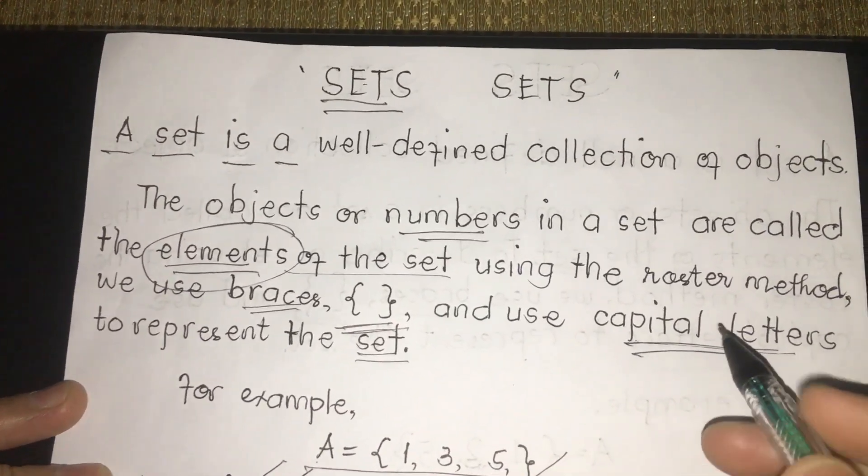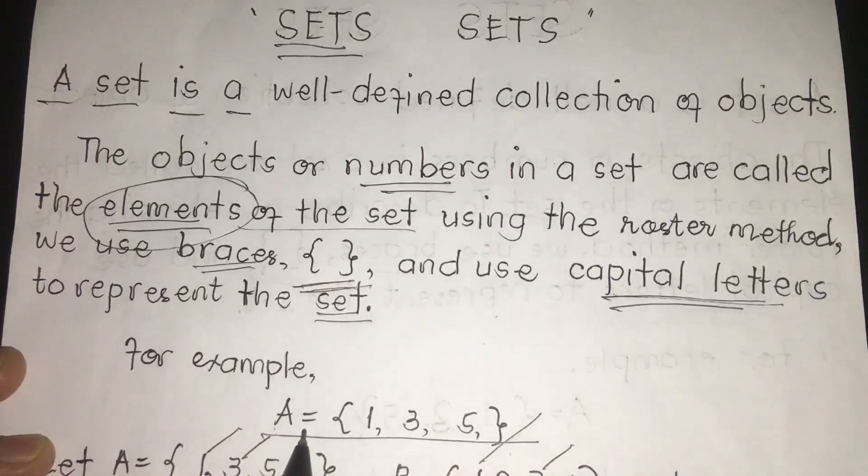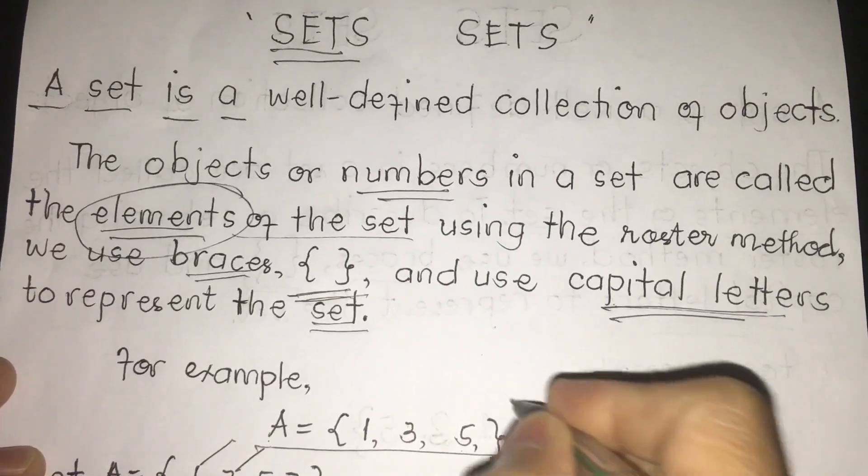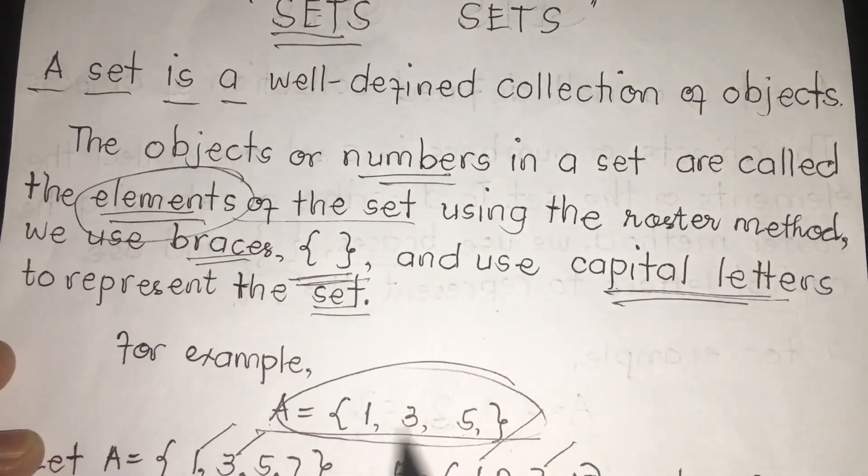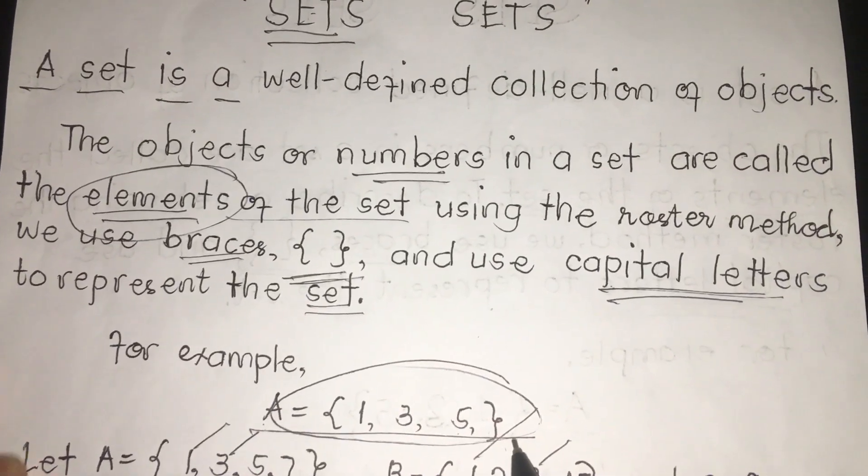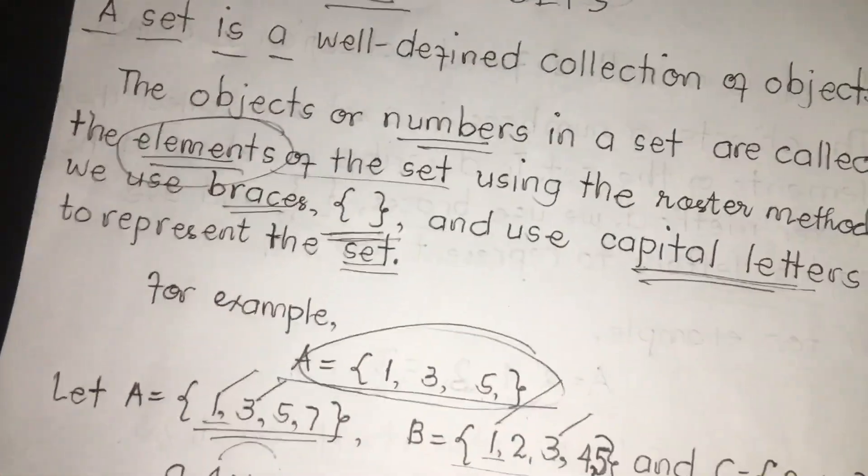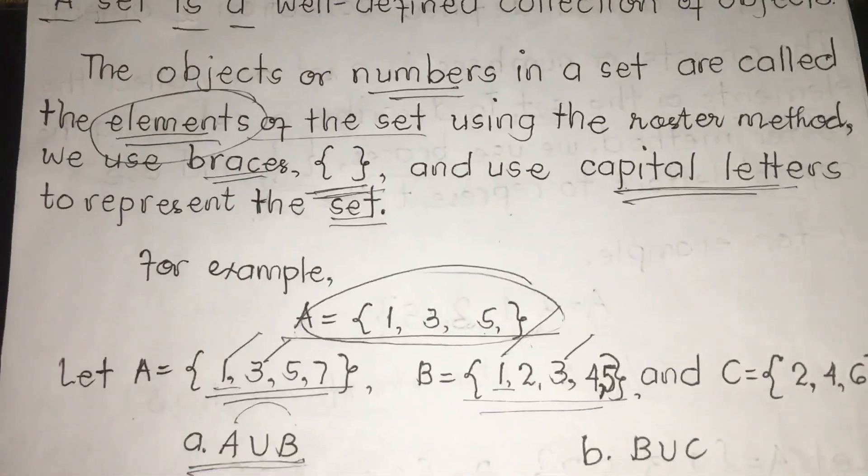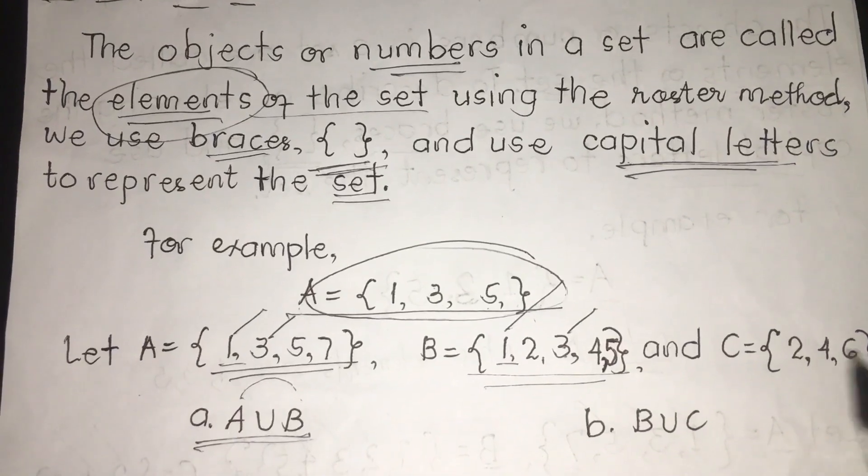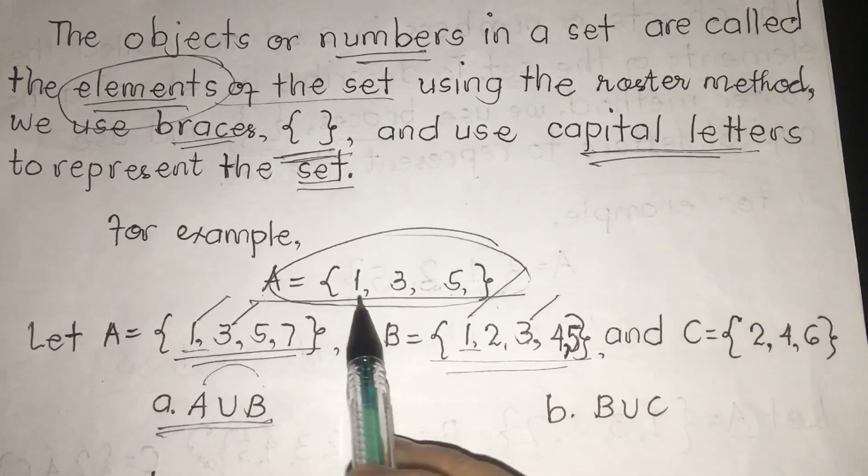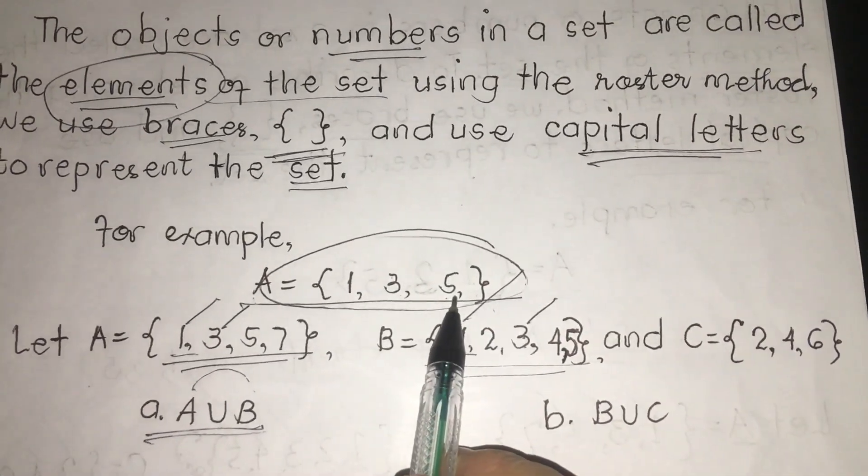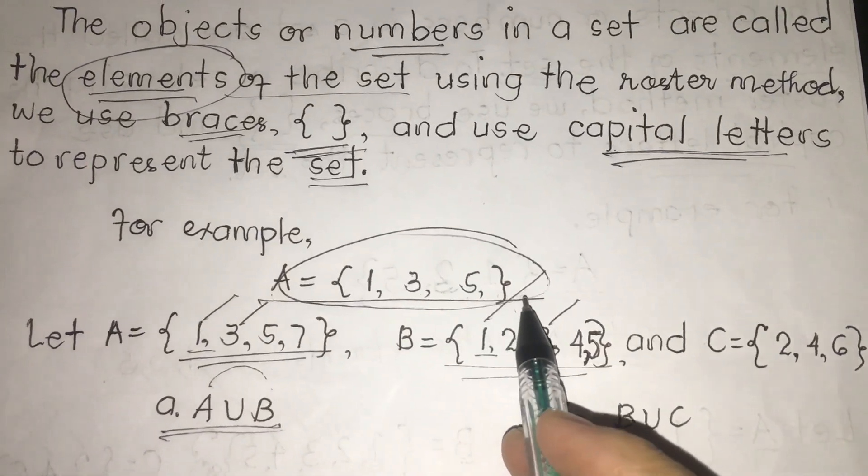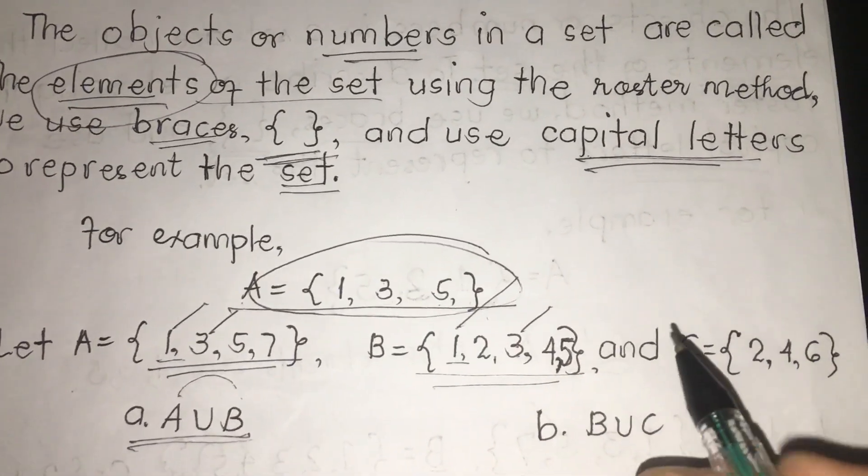For example, we have here A equals 1, 3, 5. Then we put braces here. This is what we call. An example of how to write capital letters, using braces and representing the numbers or the numbers of objects rather. So we have first our problem.